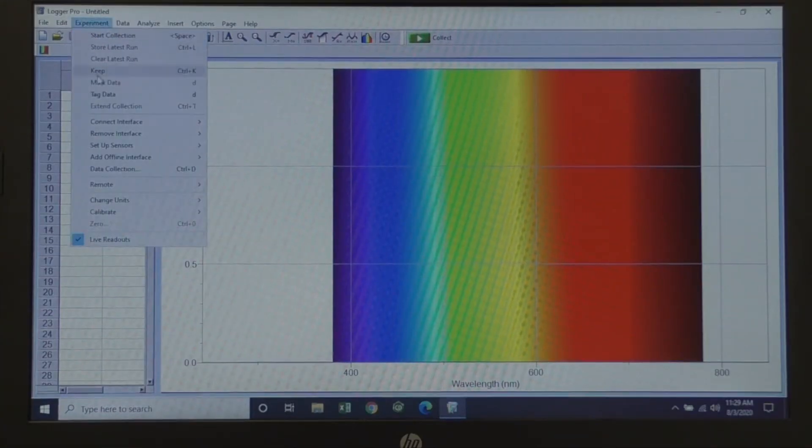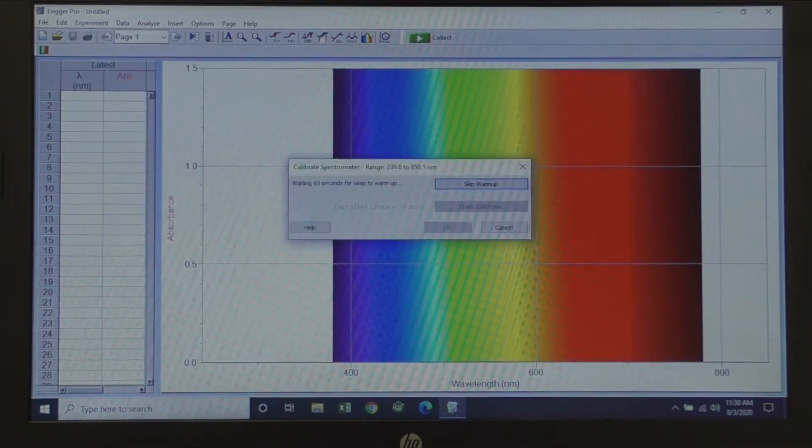Click Experiment, Calibrate, Spectrometer 1. Choose Skip Warm-Up as the spectrometer has been on and then finish calibration.